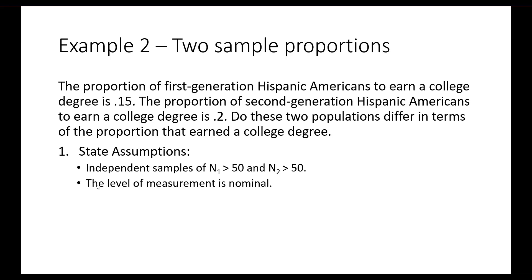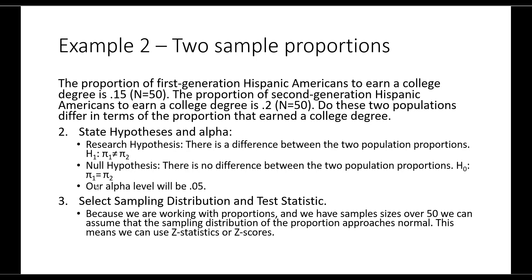Finally, let's look at an example comparing two sample proportions. The proportion of first-generation Hispanic Americans to earn a college degree is 0.15, and the proportion of second-generation Hispanic Americans is 0.2. We want to know if these two populations differ in the proportion earning a college degree. Our assumptions: two independent samples each with n greater than 50, and nominal level measurement. Our research hypothesis is that there is a difference between the two population proportions — a two-tailed test. Our null hypothesis is that there is no difference. We use an alpha of 0.05.